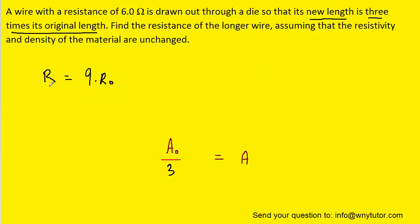And so, in essence, we can see that the final resistance of the wire is equal to 9 times its original value. The question notes that the original resistance was 6 ohms. So now we can simply plug into this equation to find the final resistance of the new wire. And when we perform that calculation, we can see that it's equal to 54 ohms.